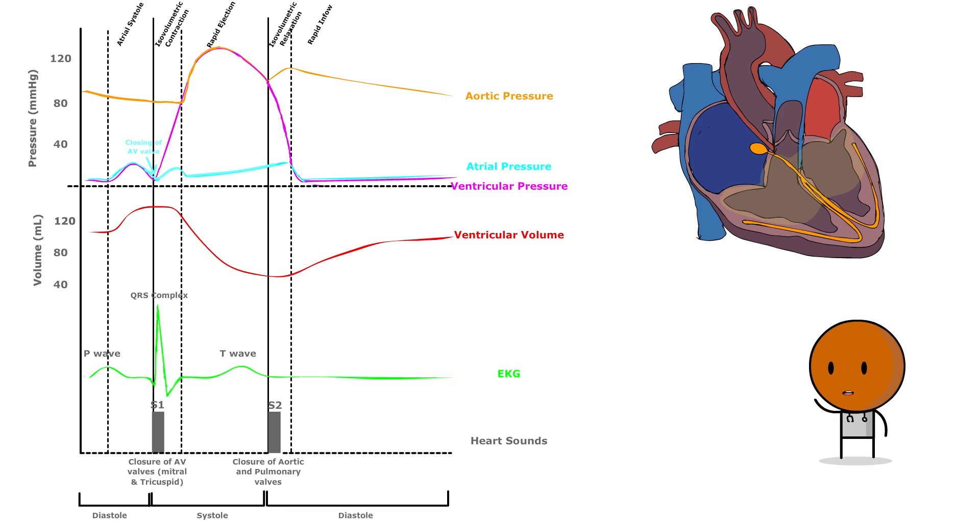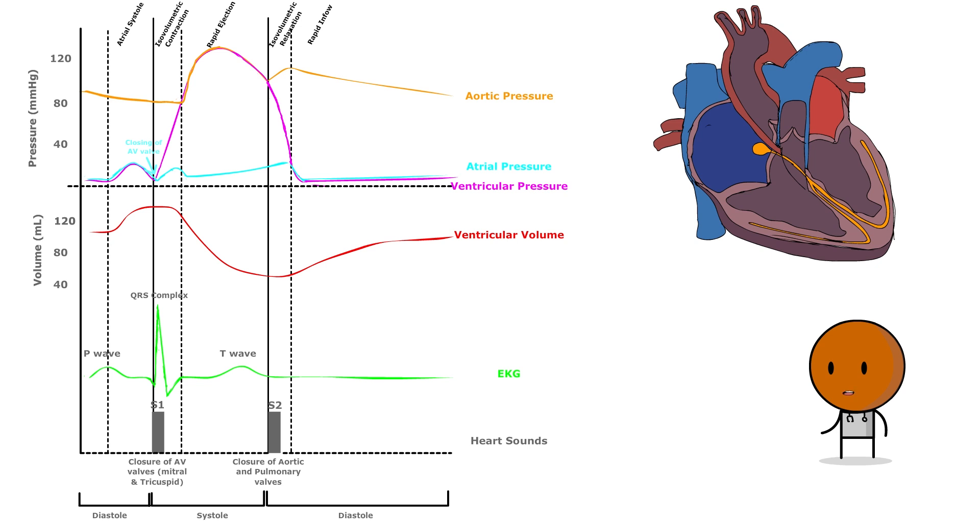Phase five is isovolumetric relaxation. Once the ventricular systole ends and the ventricles start to relax, the atrial pressure reaches its highest point, known as the V-wave, because the atria are filled with blood, but the closed AV valves prevent it from entering the ventricles.